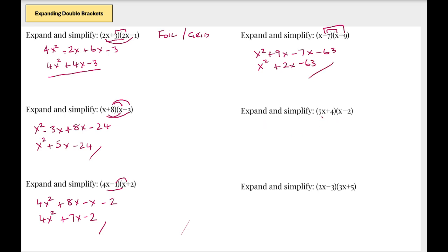Next one, times out to plus 8x and plus 4x. 4 times minus 2 is minus 8. Simplify it all down. Minus 10x plus 4x is minus 6x, minus 8.